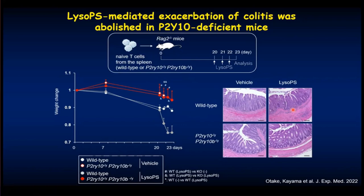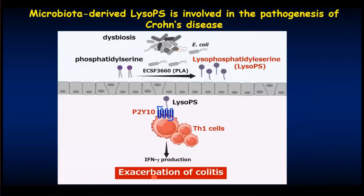To summarize: in Crohn's disease patients, there is dysbiosis in which bacteria possessing PLA genes are increased. Accordingly, the concentration of LysoPC is increased, and this LysoPC directly acts on TH1 cells through the P2Y10 receptor, further activating TH1 cells, which leads to exacerbation of intestinal inflammation.